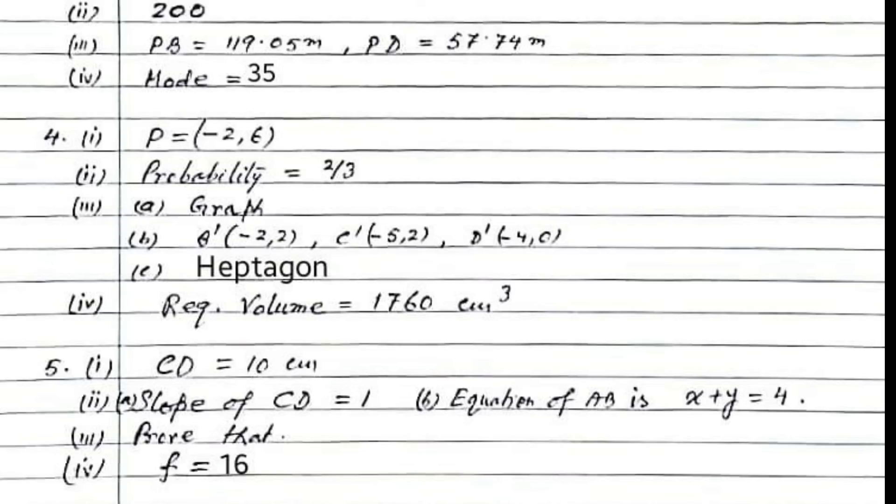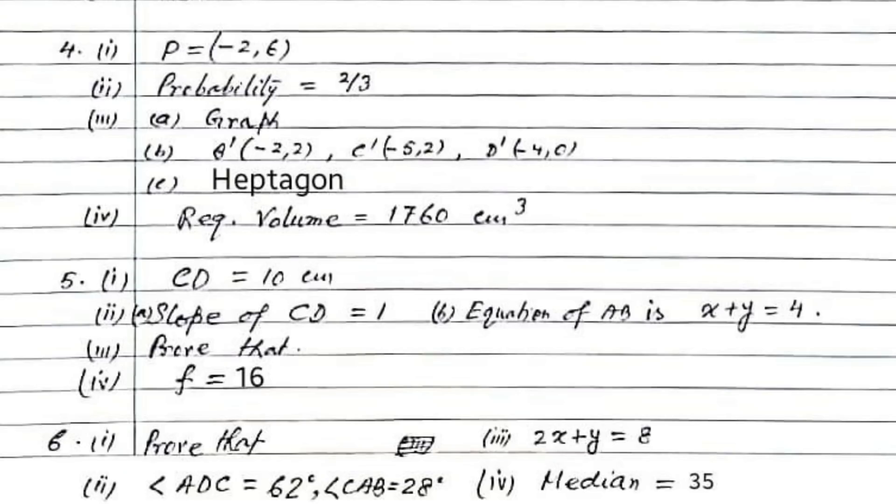The slope of CD will be 1. Equation of AB is X plus Y equals 4. The third one is a prove that question. The fourth one: F equals 16, the unknown frequency.